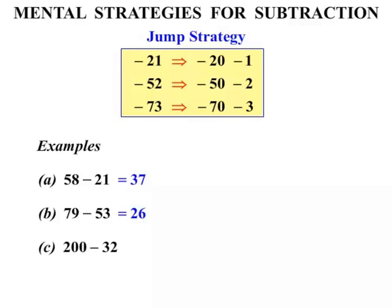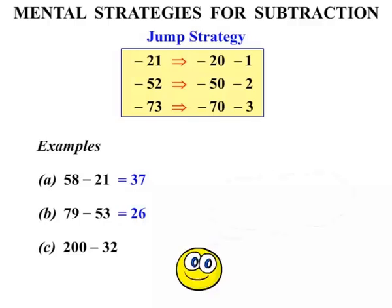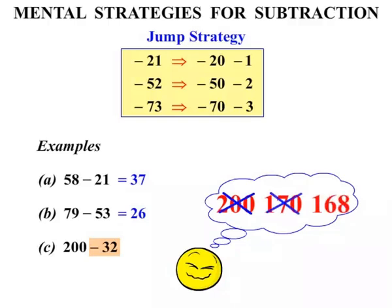The next one, 200 minus 32. So we're thinking 200 to start with. Take away 32. What do you reckon? 2 steps. Take away 30, and then take away 2. So 200 take away 30 would be 170. And then take away 2 more would be 168.